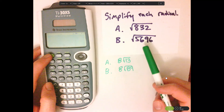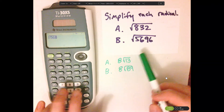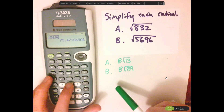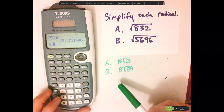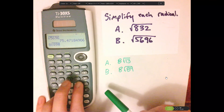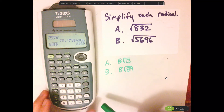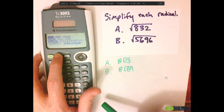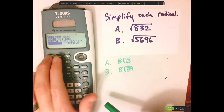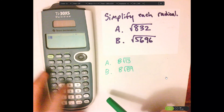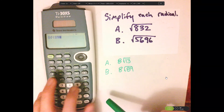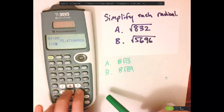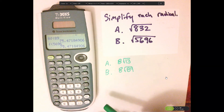Now let me show you something. Type this in — 5,696 — and I should get the same decimal. So 8 times square root of 89. Let me put it in classic mode. There we go — 8 square root of 89. Pretty sure that's the same decimal, just to verify.